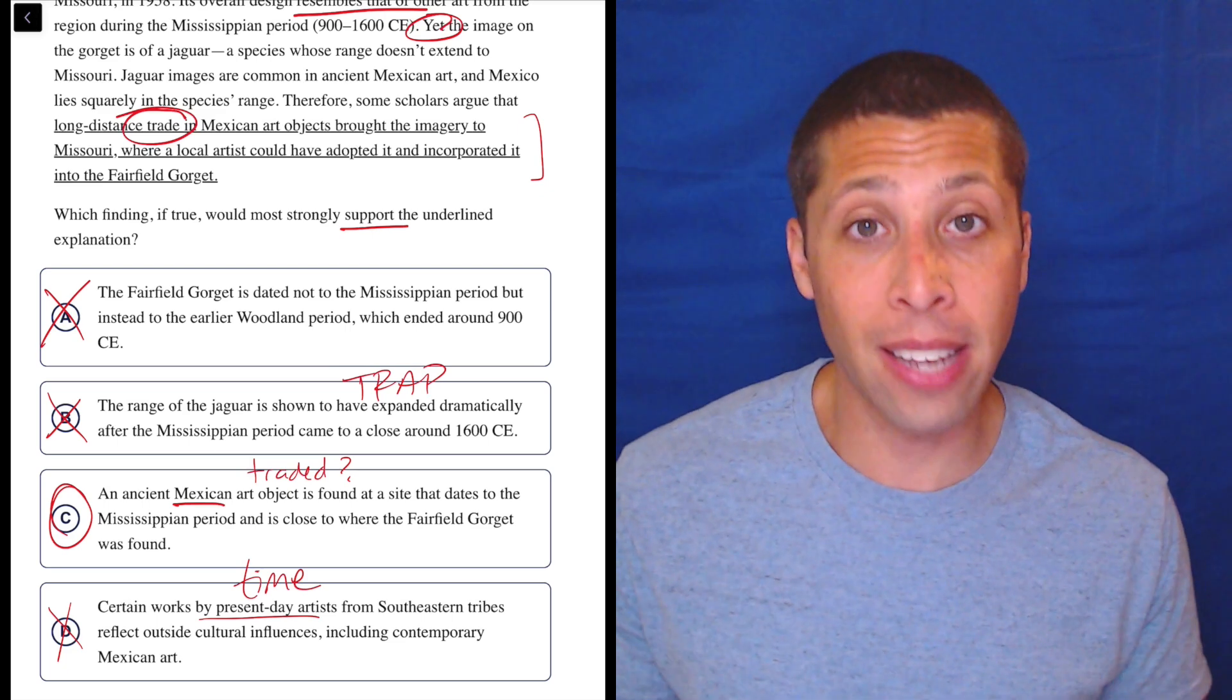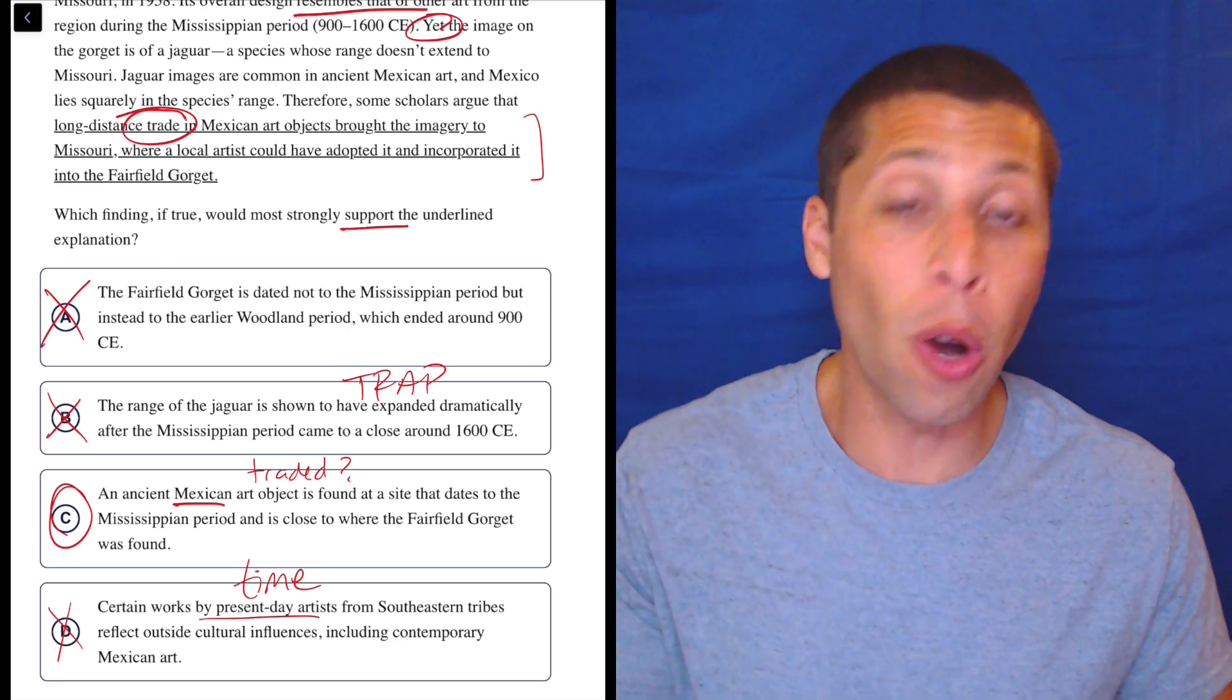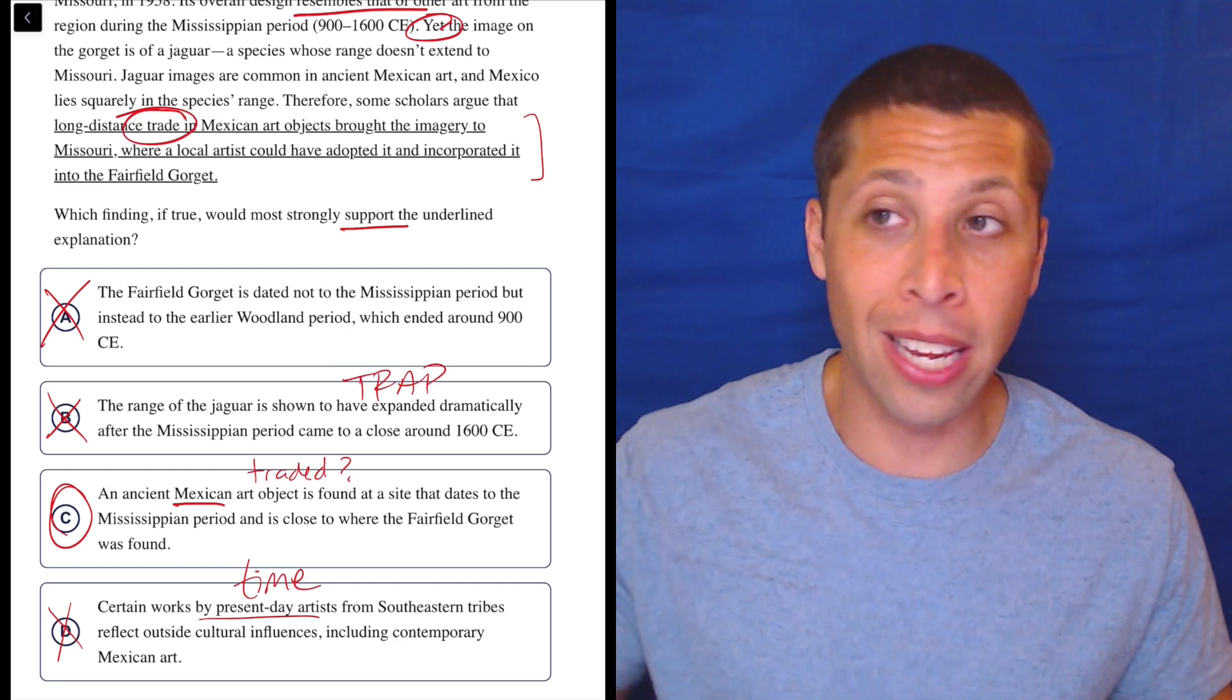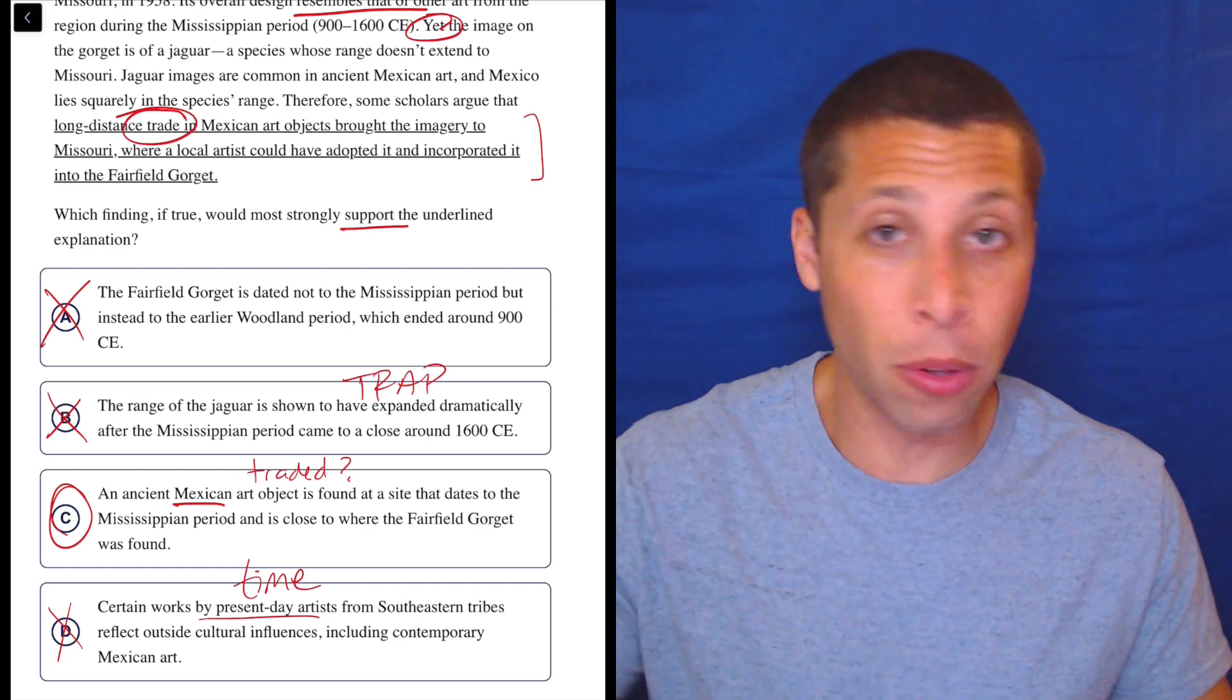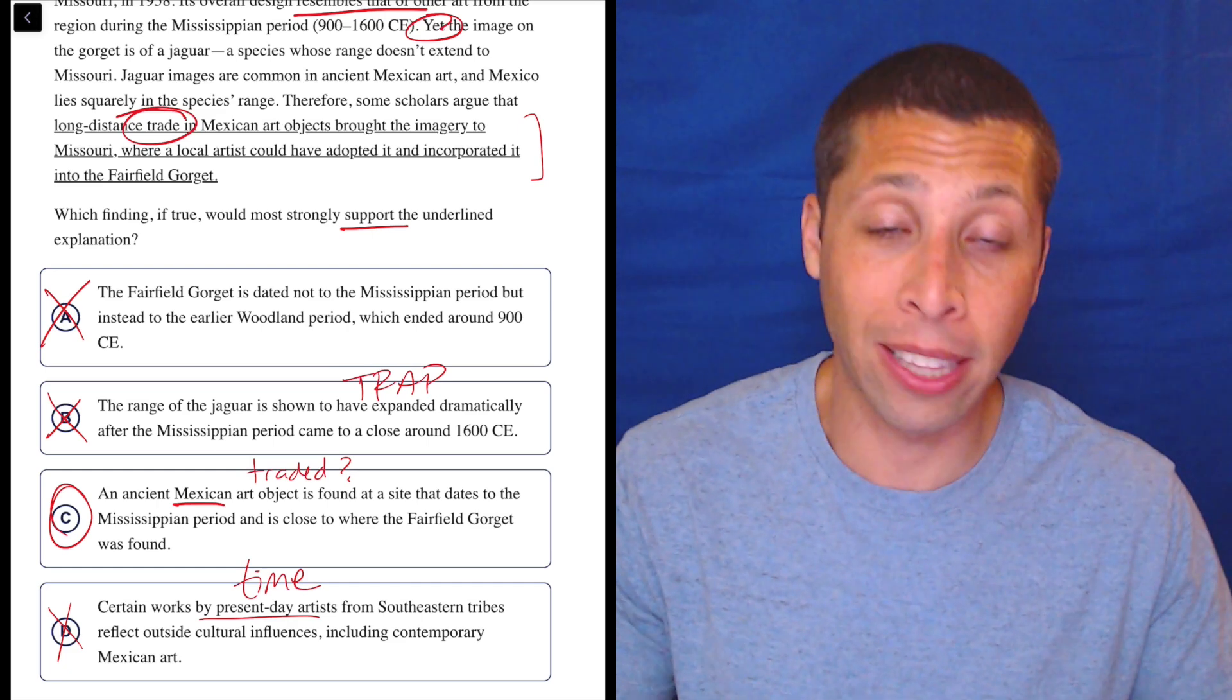And since none of these others make any sense, I'm not going to waste any more time trying to worry about it. C is the only one that I can remotely connect back to what they're talking about. So don't do more work in the choices than you need. We've proven three wrong. This is close enough, good enough to move on and get these points.